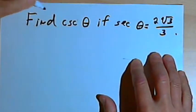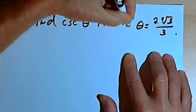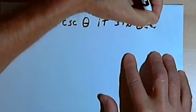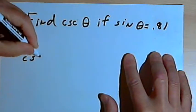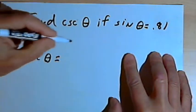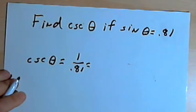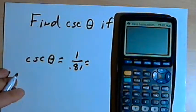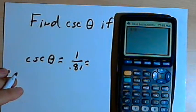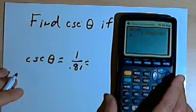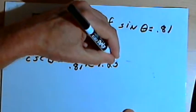I want to do one with the cosecant. Find the cosecant of theta if the sine of theta equals 0.81. The cosecant of theta equals 1 over the sine, and the sine is 0.81. So all I need to do is take a calculator and find 1 divided by 0.81, which gives me approximately 1.23.